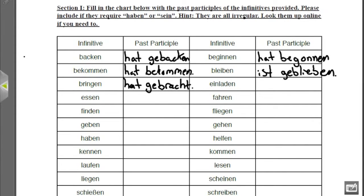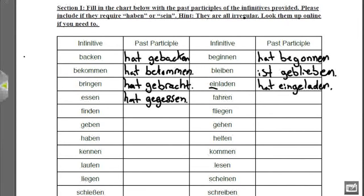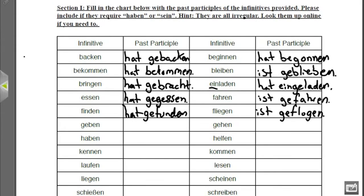Einladen — this is our first example of a separable prefix verb, and so this one seems a little weirder than it really is: hat eingeladen. Essen: hat gegessen. Fahren: ist gefahren. Finden: hat gefunden. Fliegen: ist geflogen — notice that one did the same thing as Beginnen, changing the I to an O. Geben: hat gegeben. Gehen: ist gegangen.